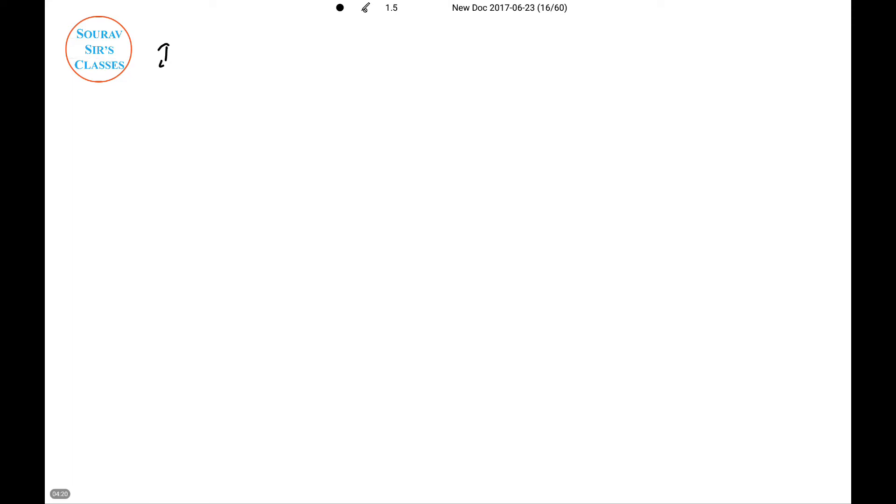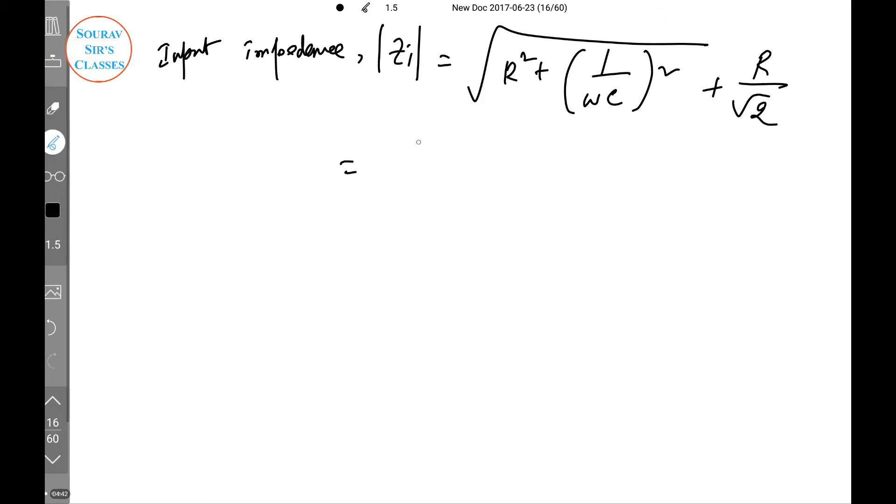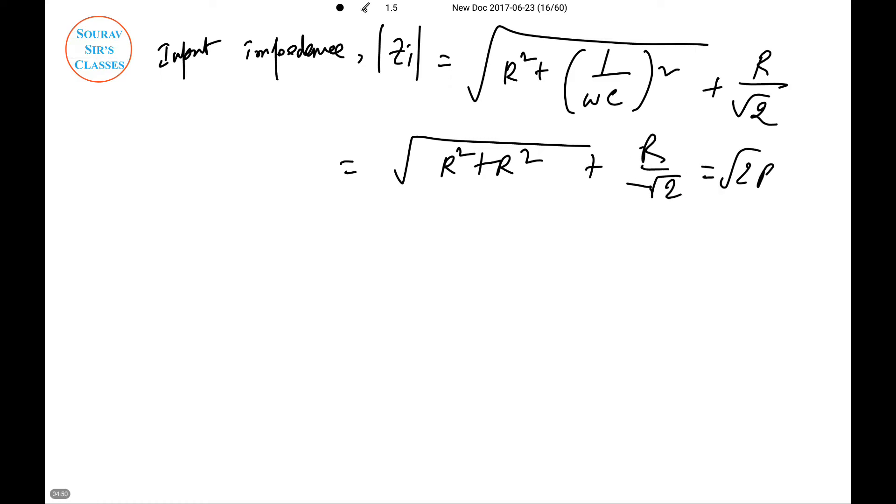So Zi = √2R + R/√2. The voltage gain is |V0/Vi| = |Z0/Zi|, which equals (R/√2)/(√2R + R/√2).